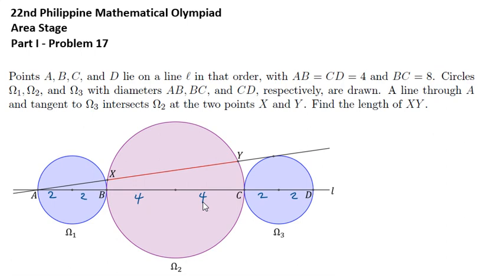Now I'll draw a radius of omega 3 to the point of tangency. Take note, line XY is tangent to omega 3. So if I draw a radius of omega 3 to the point of tangency, we will form here a right triangle. If there is a line tangent to a circle, and if we draw a radius of that circle to the point of tangency, then the radius and the tangent line are perpendicular at the point of tangency, meaning you will form a right triangle. Let's call this point V and this one T. So VT is also 2 units because it's also a radius.